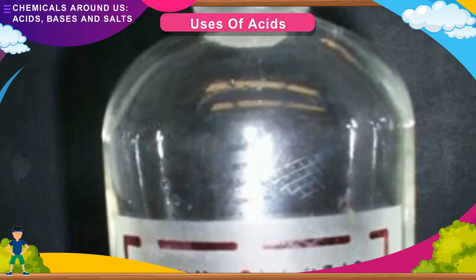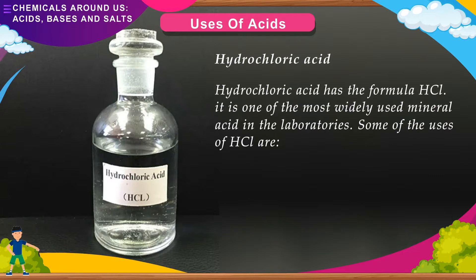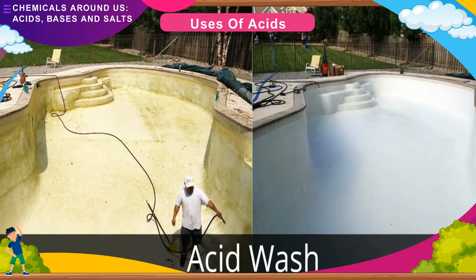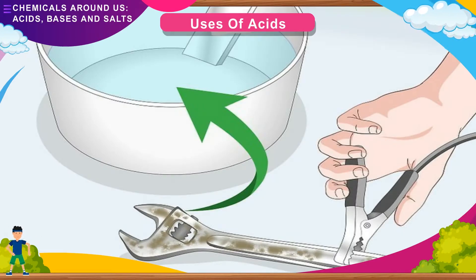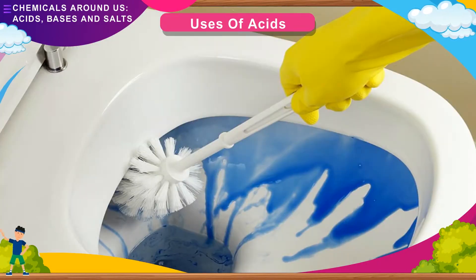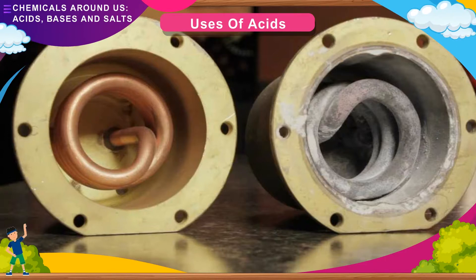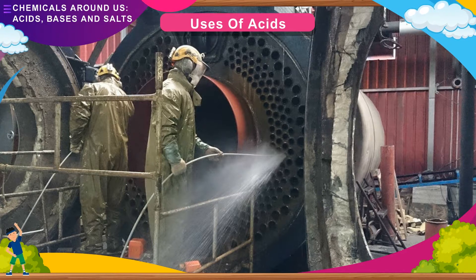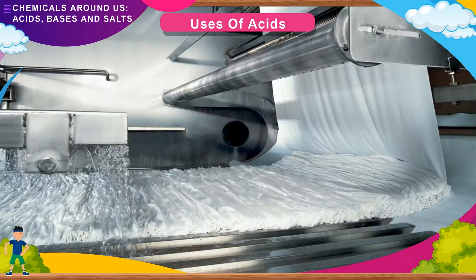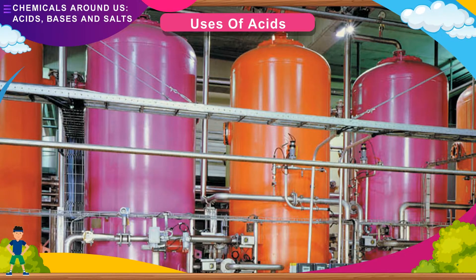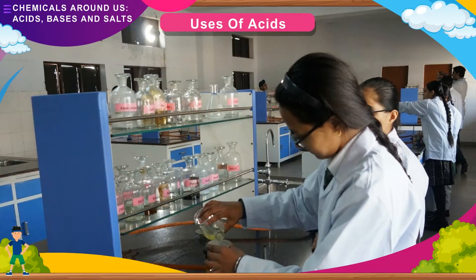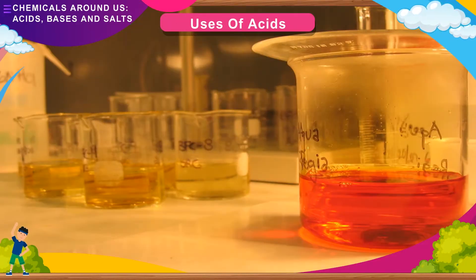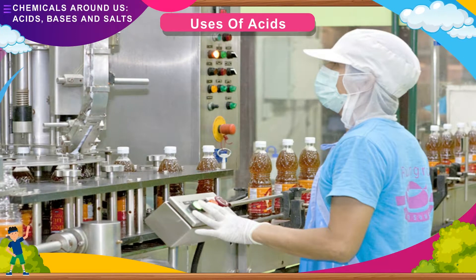Uses of acids: Mineral acids are widely used for many purposes. Hydrochloric acid (HCl) is one of the most widely used mineral acids. Its uses include: cleaning metal surfaces before tinning and galvanizing, cleaning ceramics and bricks, use as a toilet cleaner, descaling (removing deposits from inside boilers), purification of common salt, bleaching agent in textile industry, manufacturing glucose from starch, as a reagent in laboratories, making glue, preparing aqua regia with nitric acid (3:1 ratio), and dissolving oil-bearing rocks in oil industries.